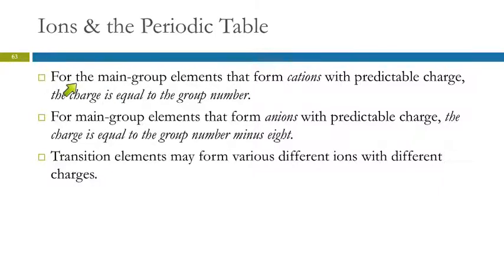Here's the summary of that. Main group elements that form cations, the charge is equal to the group number. Those are the A group numbers. For the ones that form anions, non-metals form negative ions. Non-metal, negative. Those are the anions. The group number minus eight gives you the charge. And then the transition elements, unpredictable.